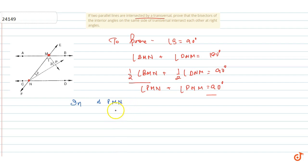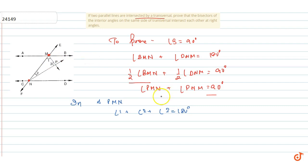So angle 1 plus angle 2 plus angle 3 equals 180 degrees. Here we call angle PMN as angle 1, and angle PNM as angle 2. So angle 1 plus angle 2 equals 90 degrees.